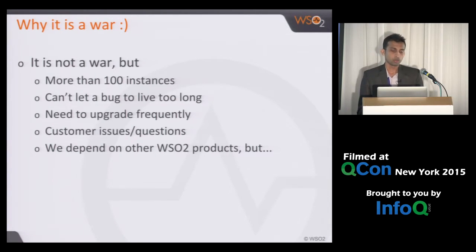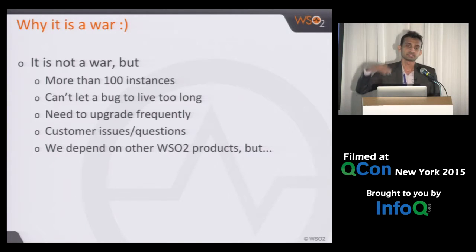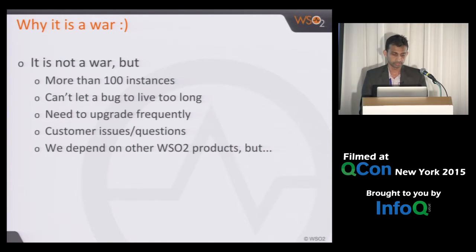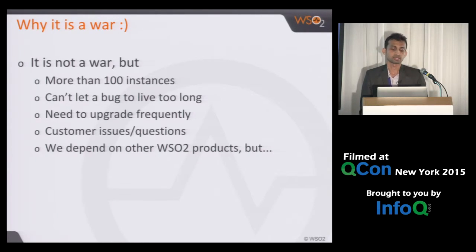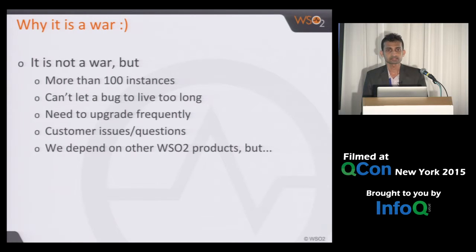We also can't let the system run on old product versions for a long time — we need to upgrade frequently. If API Manager version 1.9 is released and we're running 1.8, users start asking when we're going to upgrade. The biggest challenge is that we depend on other WSO2 products, but for those product teams, we are just another customer. Even though we run within WSO2, we don't have much say — we have to file bugs and get them fixed the same way external customers do.